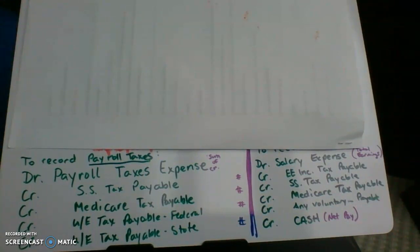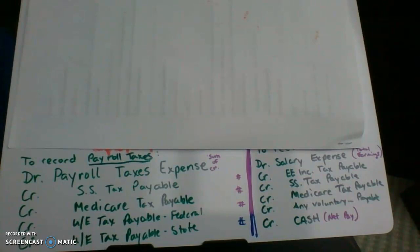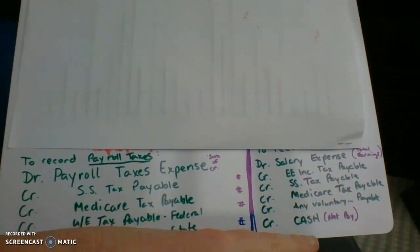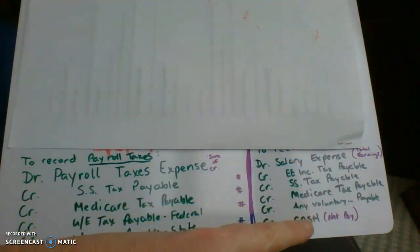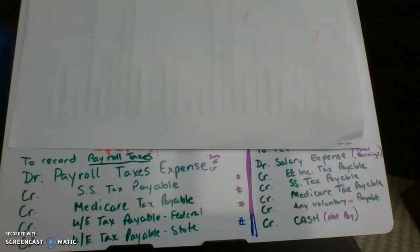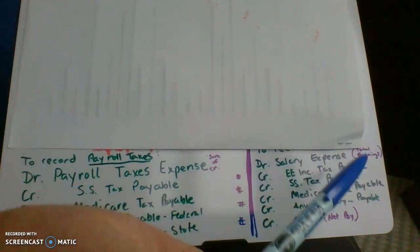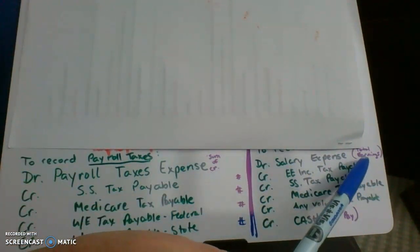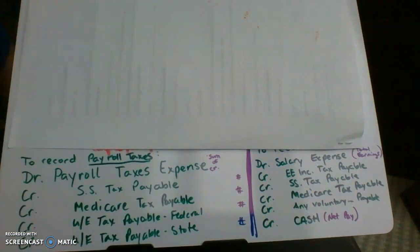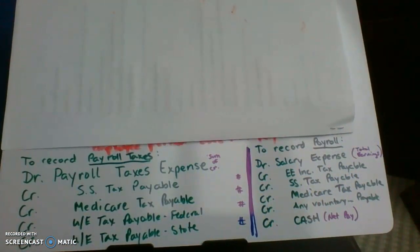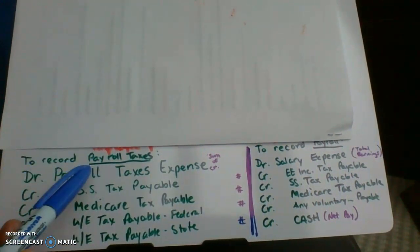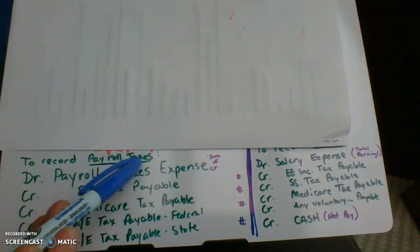We are going to move on to section 13-2, which is recording employer payroll taxes. The entry we just reviewed is for recording the payroll only — it is not for payroll taxes.